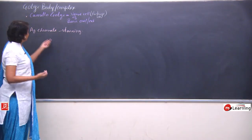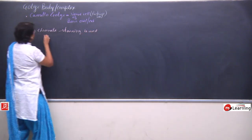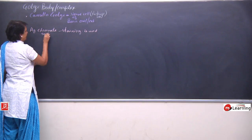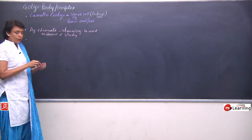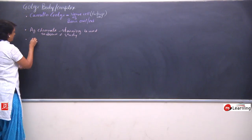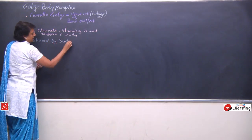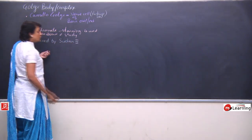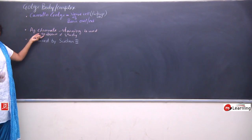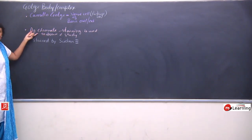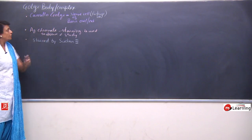Because of the same density, it is not visible clearly, and that is why silver chromate staining is used to observe and study it. Golgi body can also be stained by Sudan III. This was the main method which helped Camillo Golgi observe the complete structure in the nerve fiber.